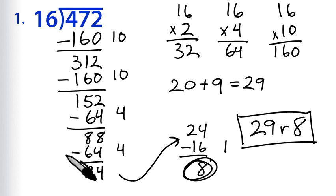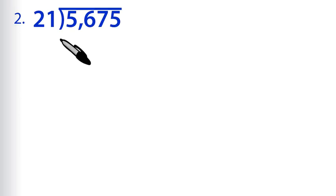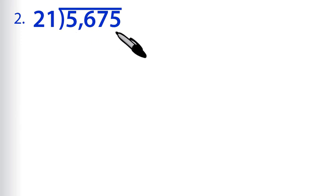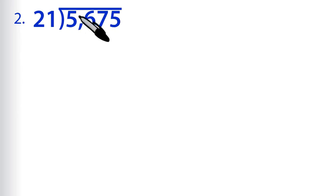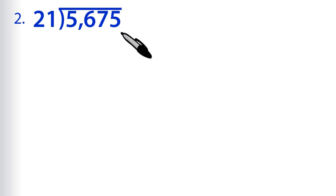Remember, you might have taken different steps to get this, but as long as 29 remainder 8 is your final answer, you got it right. For problem 2, we have 5,675 divided by 21. We're going to need to pick our multiples, and we'll probably want some pretty big multiples because 5,675 is quite a bit bigger than 21.